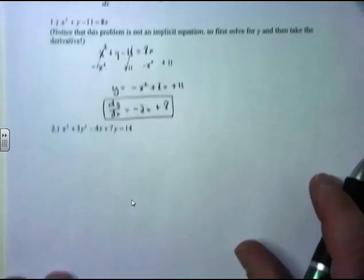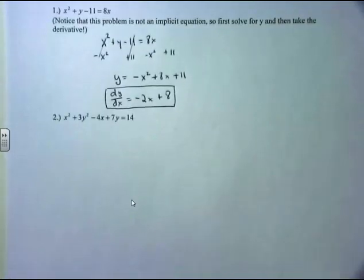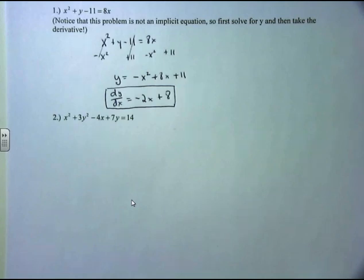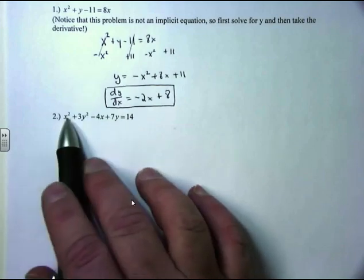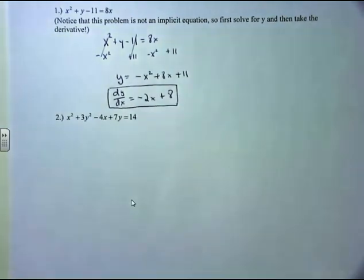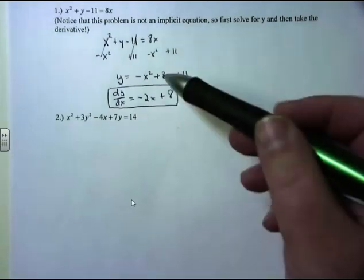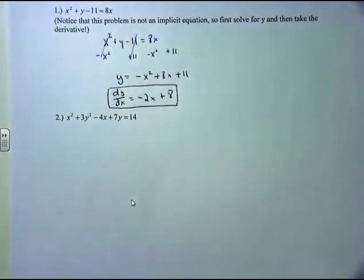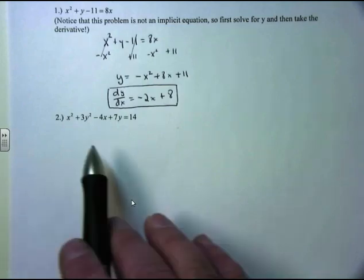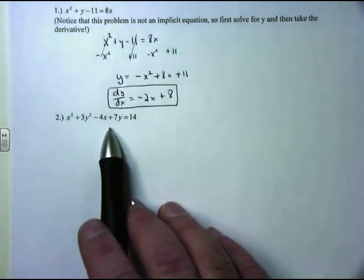Compare that to the next example: x squared plus 3y squared minus 4x plus 7y equals 14. This has a y squared term and a y term. I can't solve this thing for y — it's not as easy as the former equation. When you have a y squared term, getting a y equals equation out of this is impossible. Therefore, this is what we call an implicit equation, so we're going to do implicit differentiation.